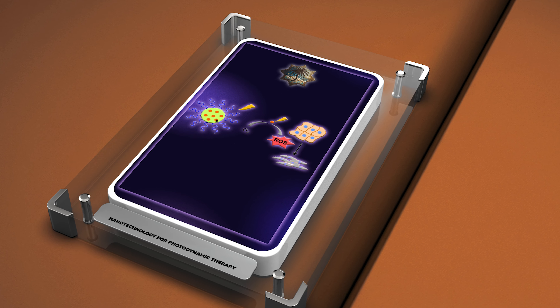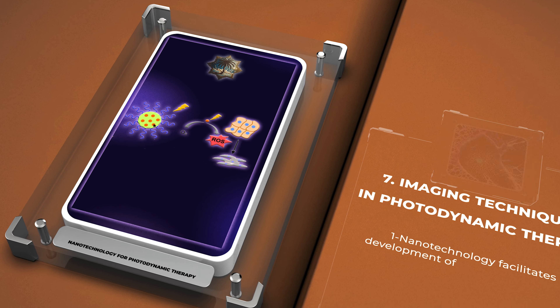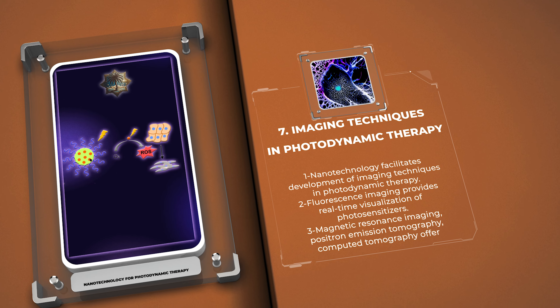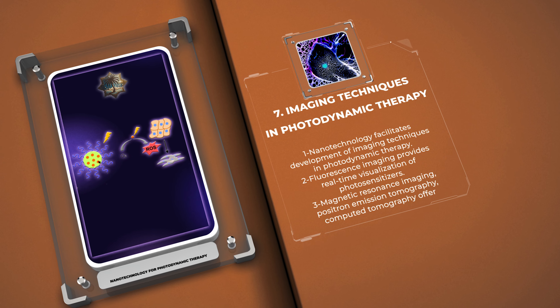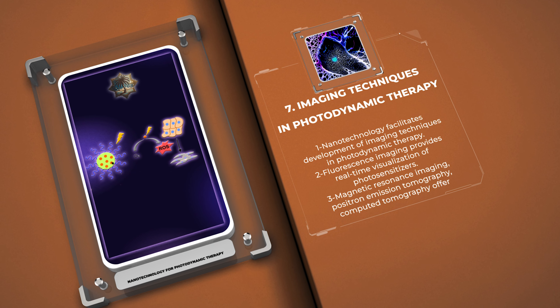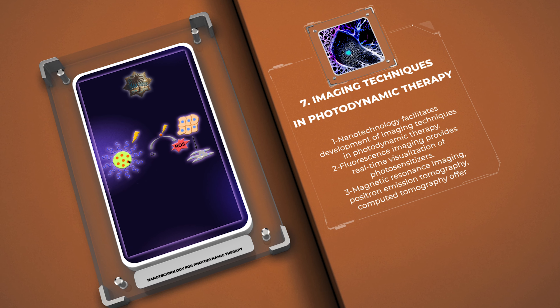Accurate imaging plays a crucial role in guiding and monitoring photodynamic therapy. Nanotechnology has facilitated the development of various imaging techniques to visualize the distribution, accumulation, and therapeutic response of photosensitizers and nanoparticles within the body. For instance, fluorescence imaging can provide real-time visualization of photosensitizers, while techniques like magnetic resonance imaging, positron emission tomography, and computed tomography offer complementary information on biodistribution and therapeutic outcome. These imaging techniques aid in optimizing treatment parameters and assessing treatment efficacy.